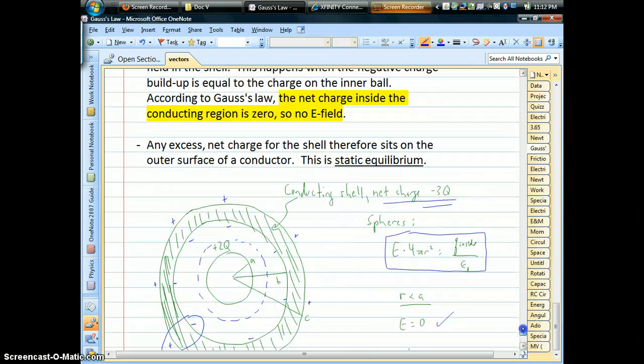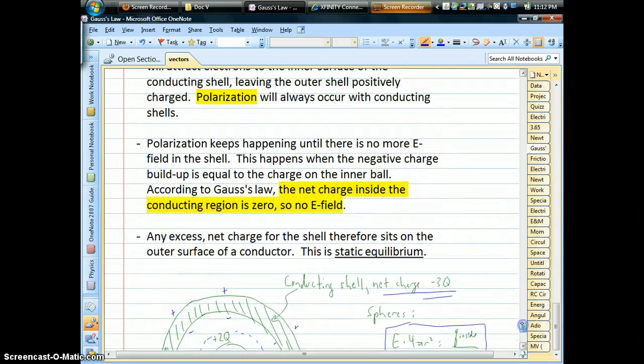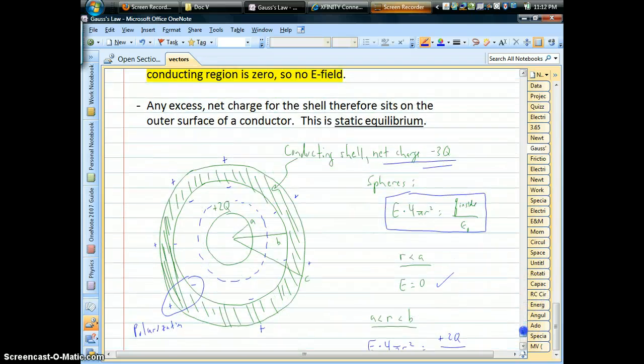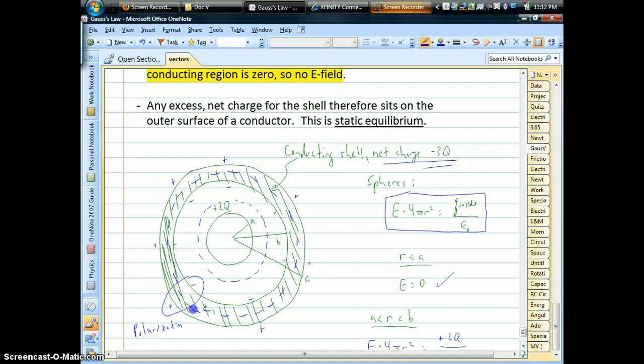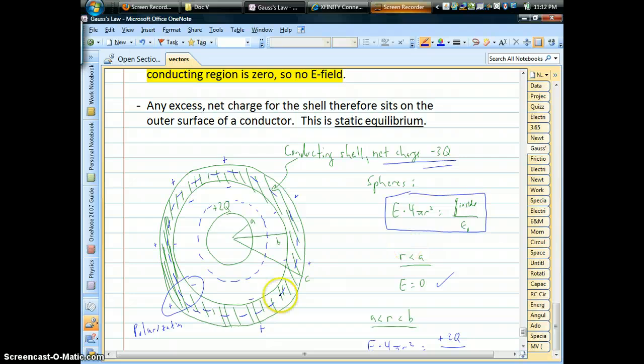Now that's going to happen until there's no electric field. As long as there's an electric field inside the metal, charges are going to be moving and the polarization's going to be happening. Now imagine I have a dashed line here, a Gaussian surface, inside the metal somewhere. According to Gauss, in order for there to be no electric field, that'll happen if you build up a negative 2Q on the inner surface.